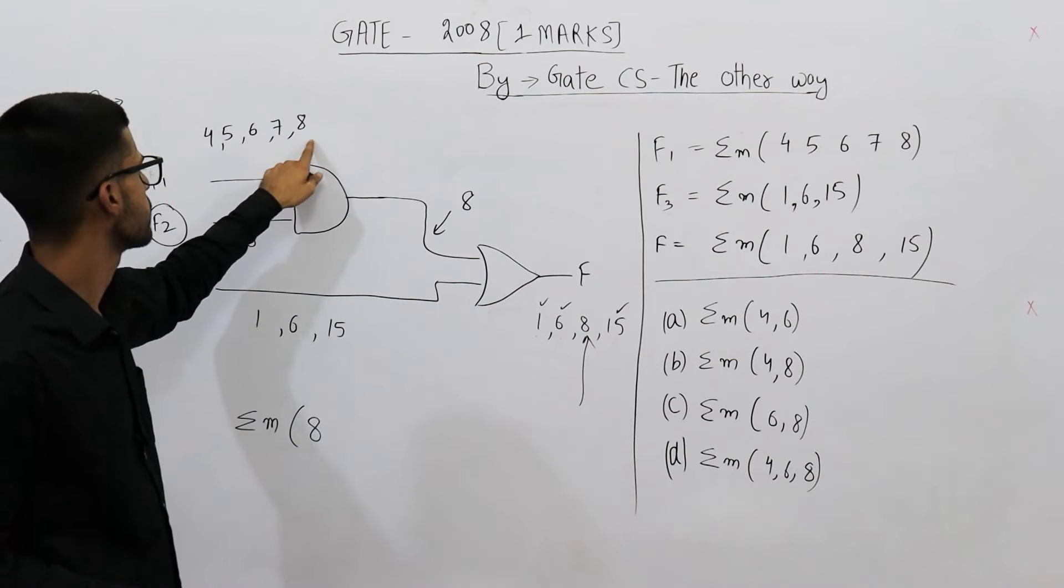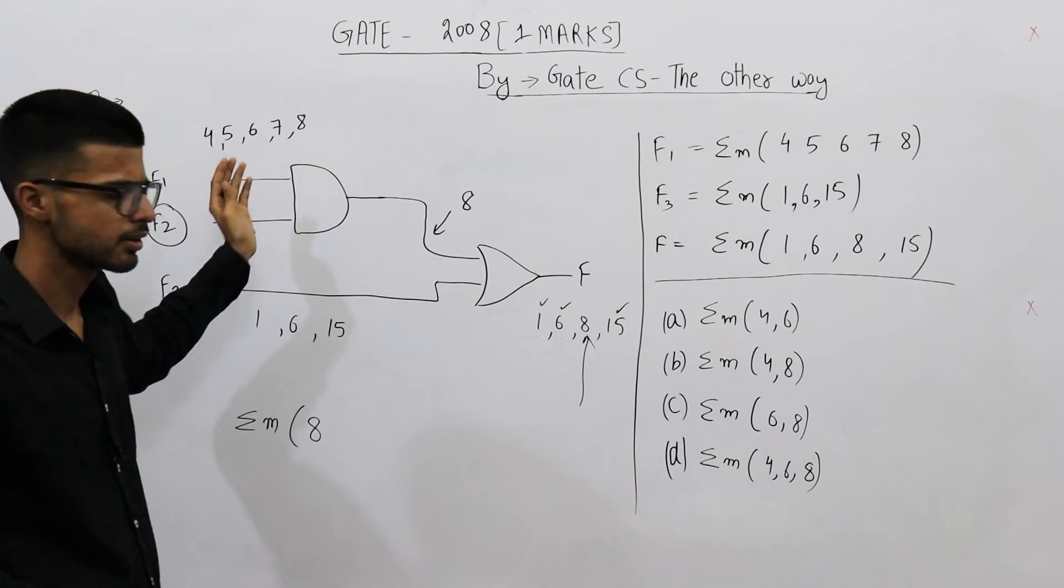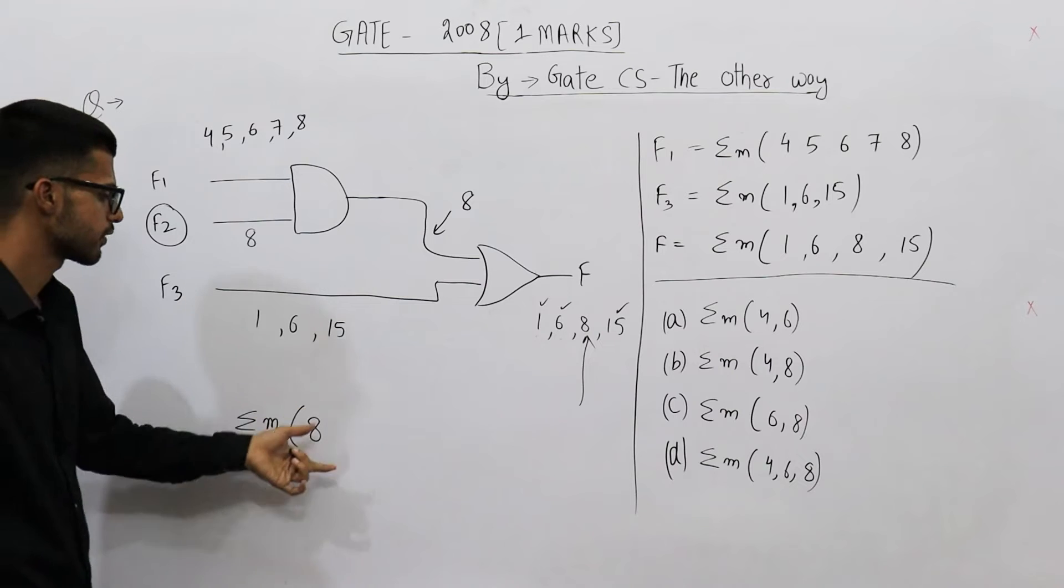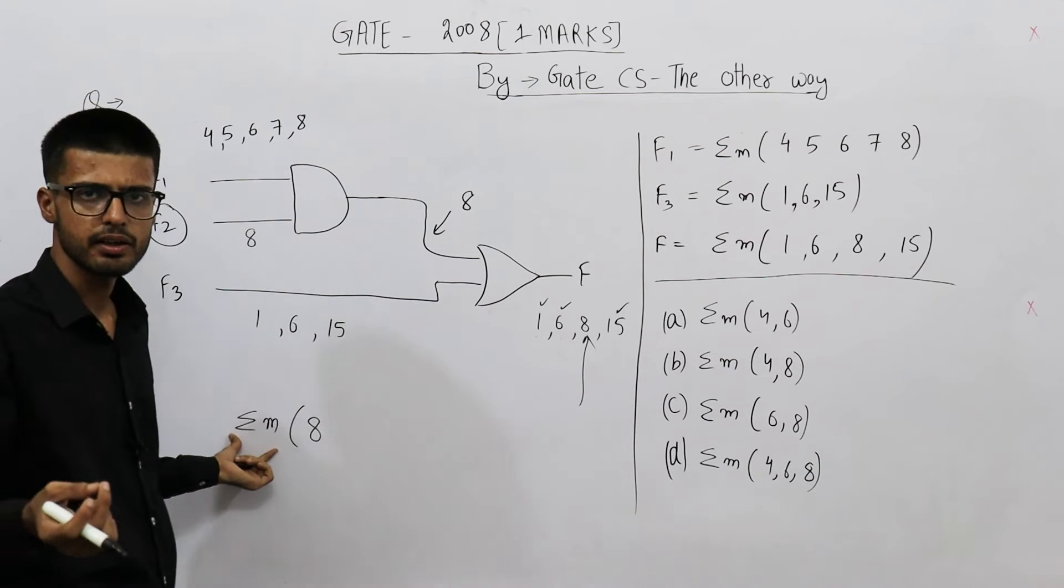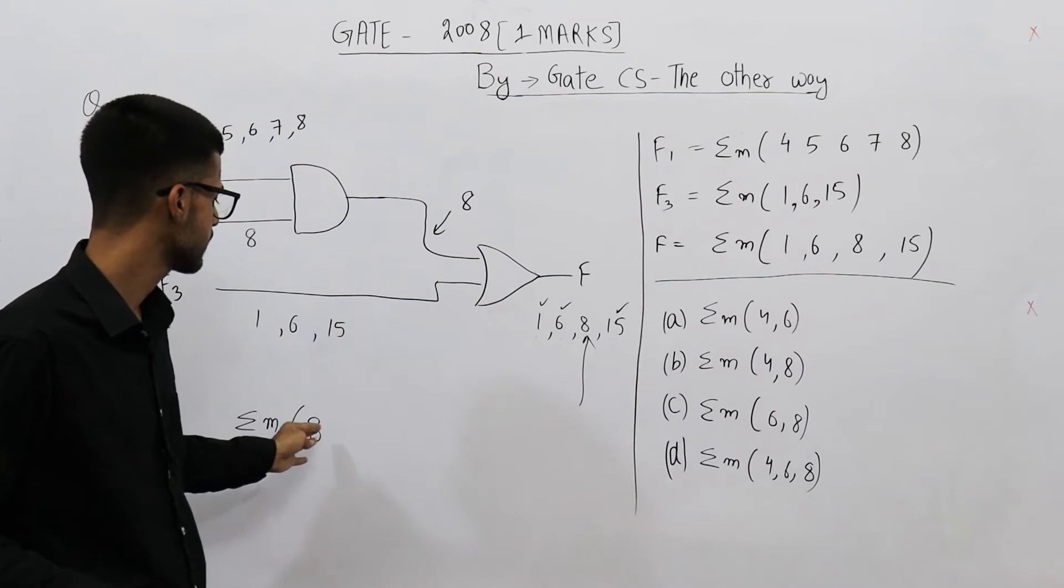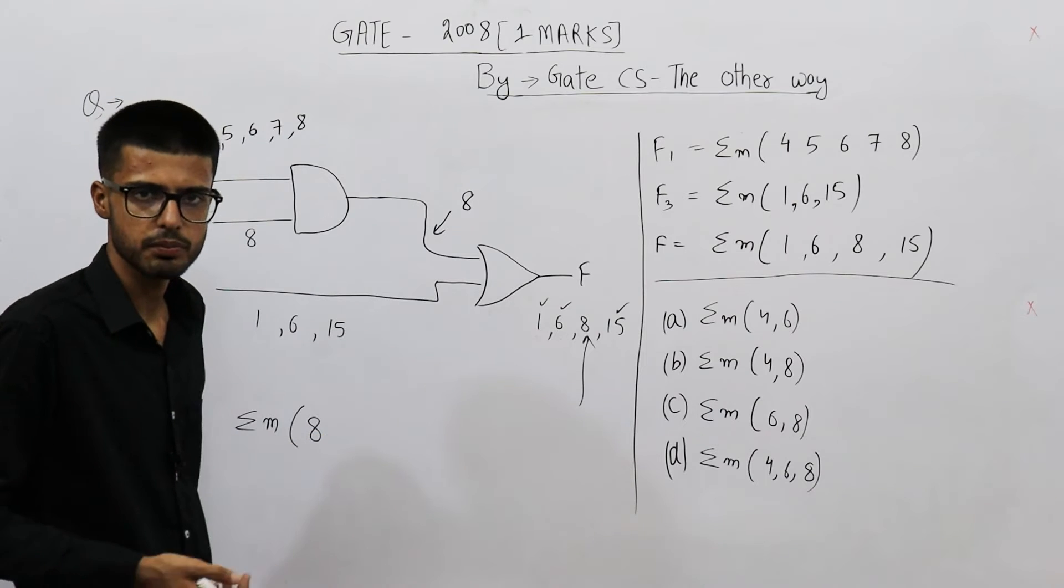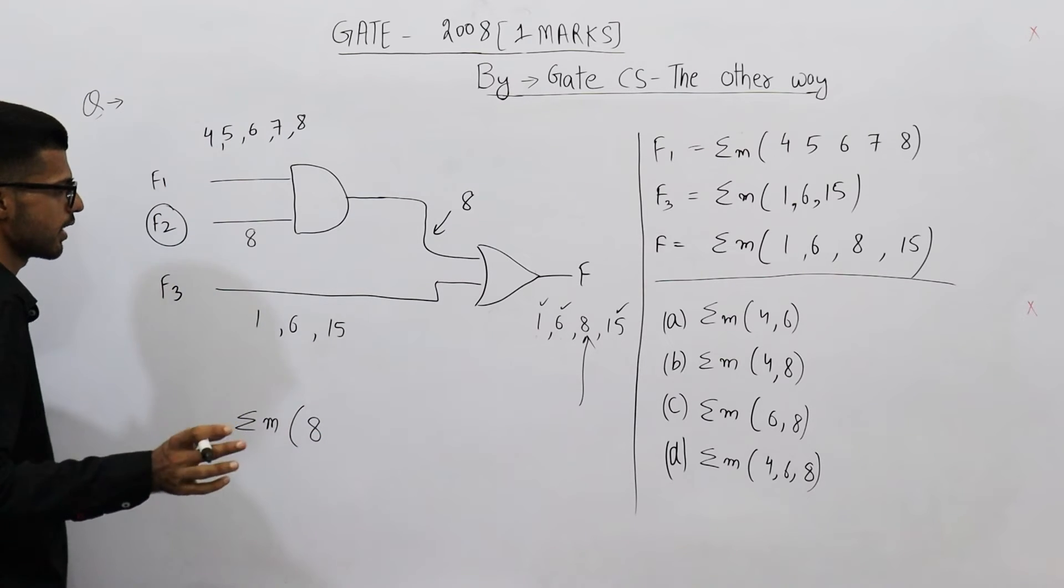Actually, I haven't written it properly. I have just written those numbers, but this is the proper way of writing: sigma m, that indicates these are the minterms, then bracket and you can write comma separated values here.